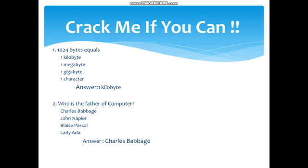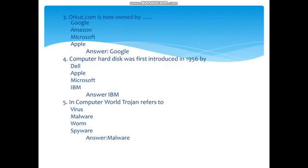Who is the father of computer? That all of you know — Charles Babbage. Orkut.com is now owned by Google. Computer hard disk was first introduced in 1956 by IBM company. In the computer world, Trojan refers to a malware — it is a type of computer virus.